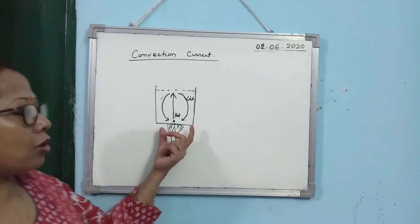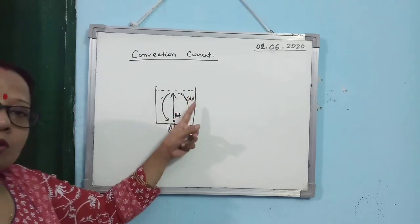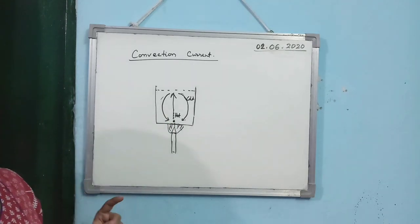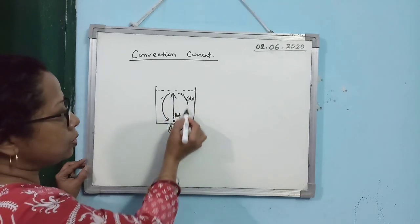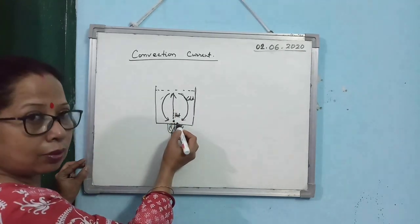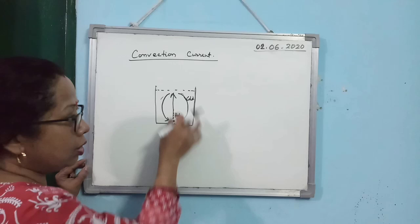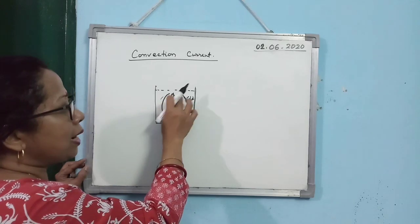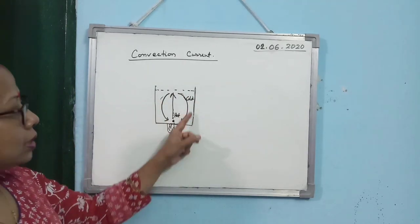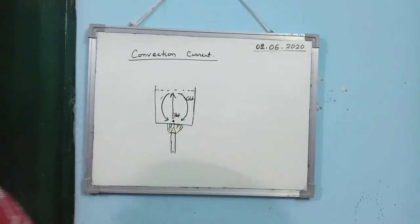Whenever a liquid or a gas is heated, this is how the entire liquid or gas heats up gradually. From the central position, the hot liquid moves up and cold liquid comes down from both sides. Hot liquid pushes cold liquid down; cold liquid comes down, gets heat, becomes hot and lighter, moves up, and heavy cold liquid comes down. This continues until the entire liquid attains the same temperature. This is known as the convection current.